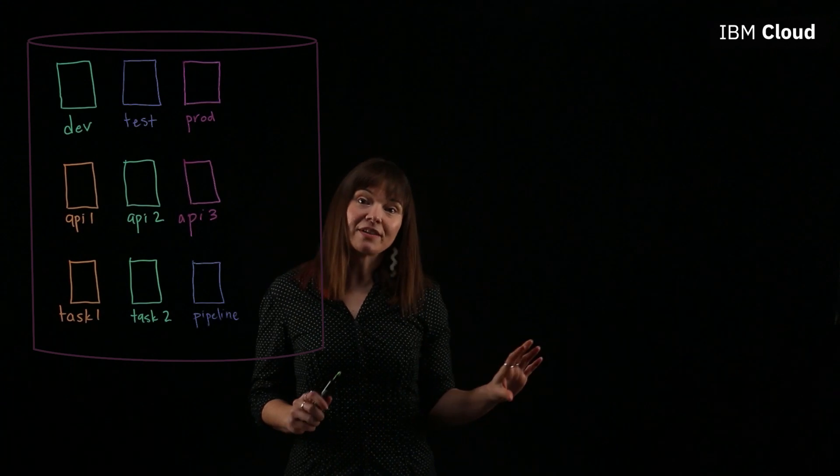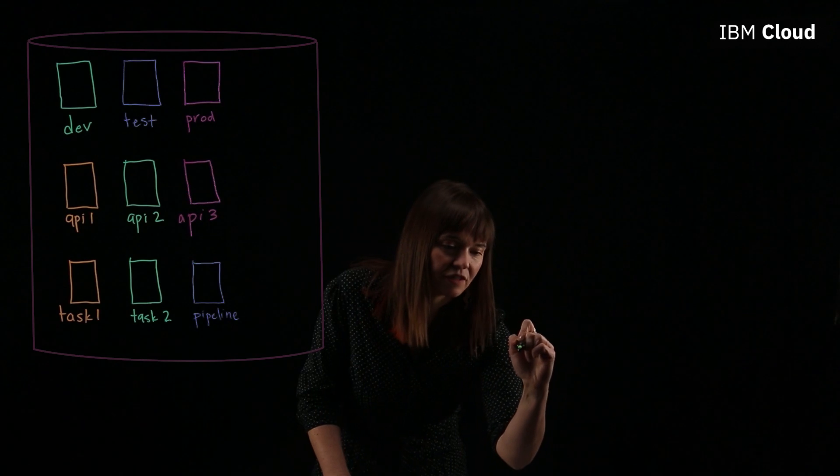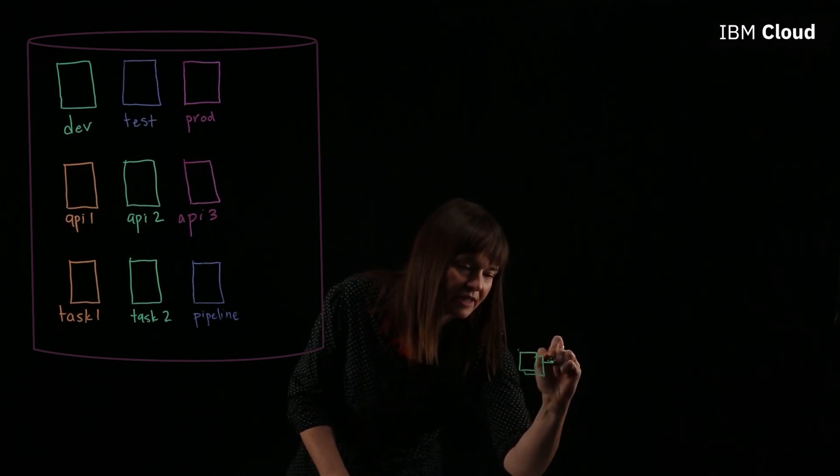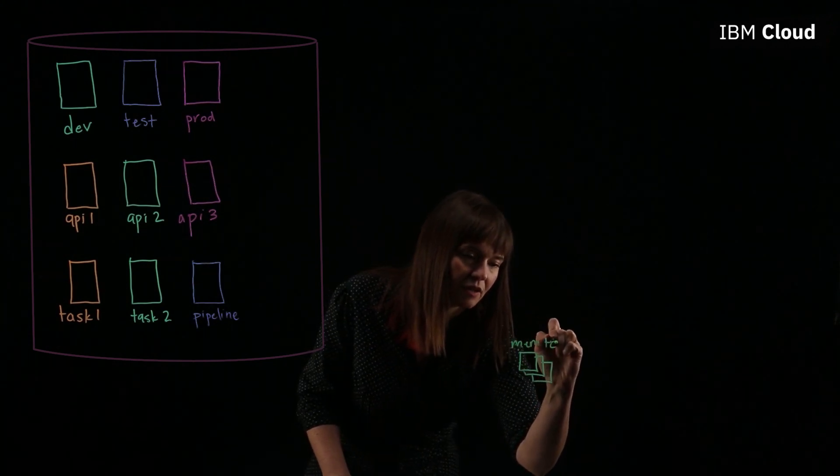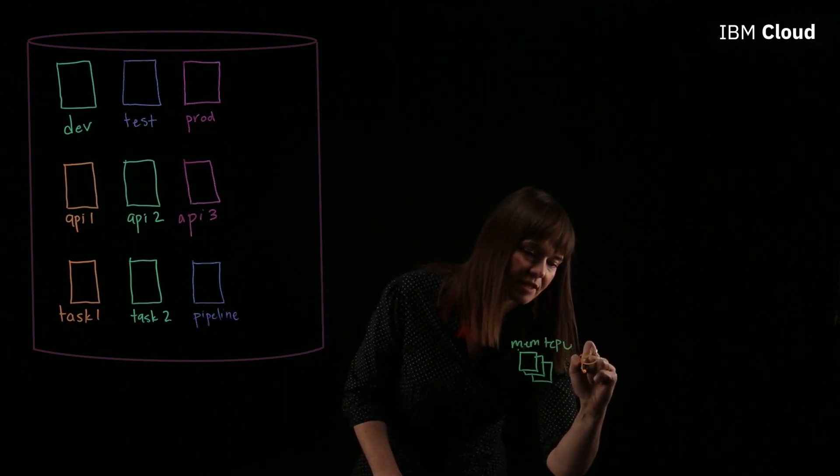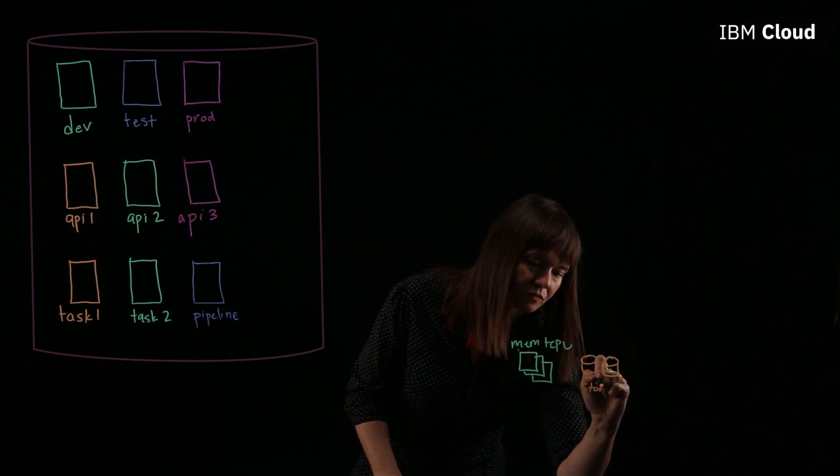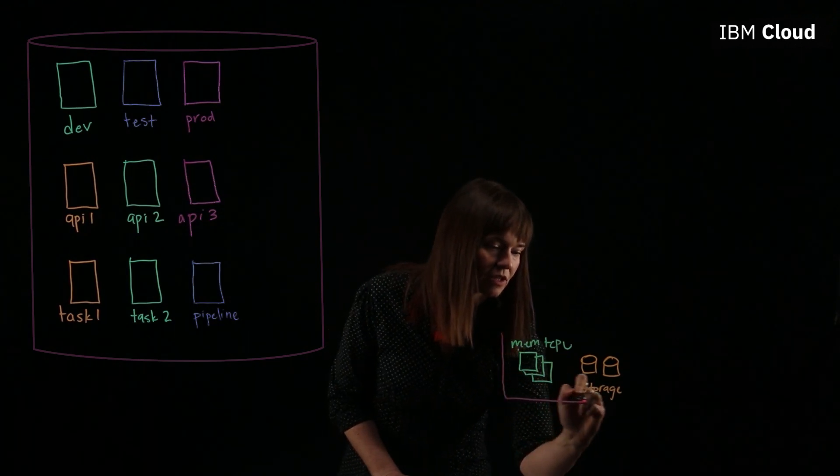So let's build out our cluster. A Kubernetes cluster, just like any, ours is going to have physical resources. So we'll have memory and CPU for our nodes. And then we'll need physical disk space for storage too. So that's the physical resources behind our cluster.